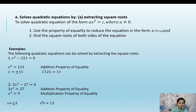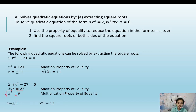So x squared equals 9. Taking the square root of both sides: the square root of x squared is x, and the square root of 9 is plus or minus 3. Therefore x equals positive or negative 3.